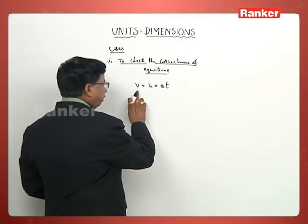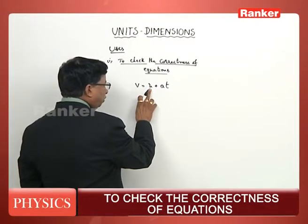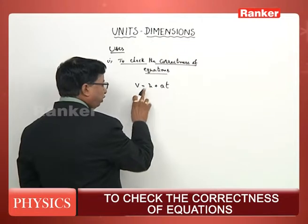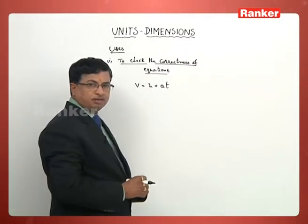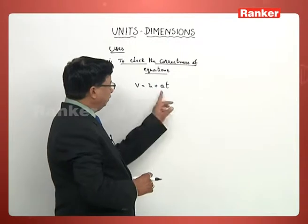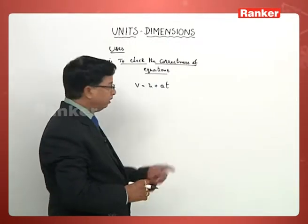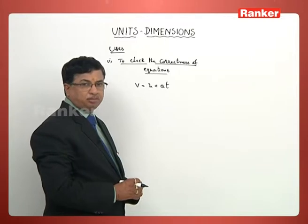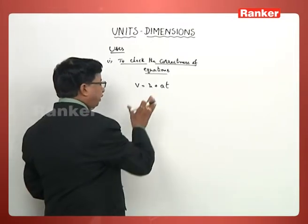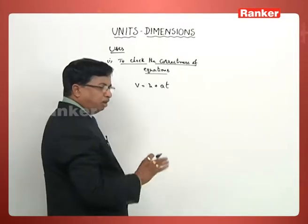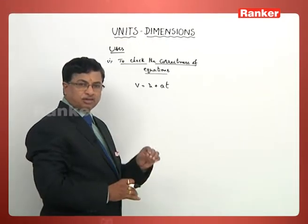When we consider v = u + at, we can understand that u is initial velocity, v is final velocity, a is the uniform acceleration of the body, and t is the time taken. Now, whether this equation is dimensionally correct or not, we just need to check.